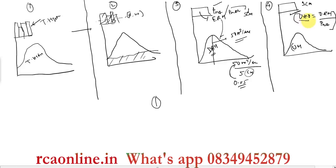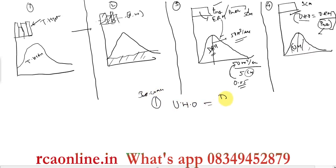Therefore, for getting the unit hydrograph ordinate, P_net should be treated as unit-less. If 5 centimeters of rainfall gives a DRH peak of 50 cubic meters per second, then 1 centimeter gives 50 divided by 5. So whatever the value of P_net, you divide by that number — treated as a dimensionless multiplier. Important conclusion: unit hydrograph ordinate = DRH ordinate / P_net (unit-less).